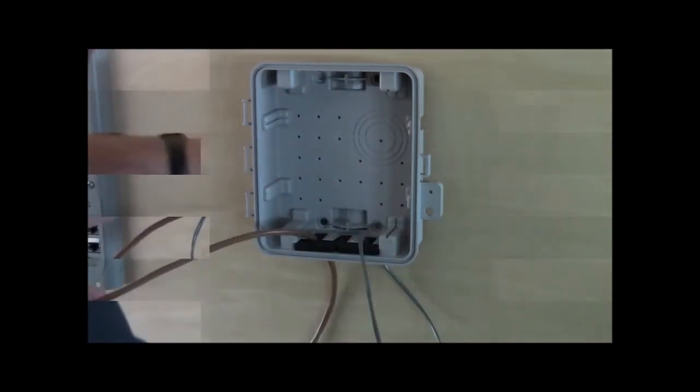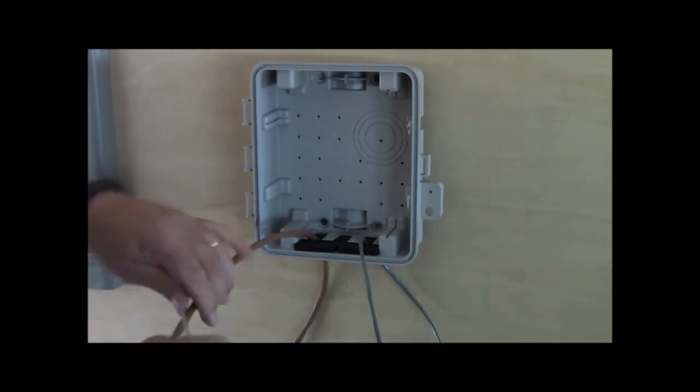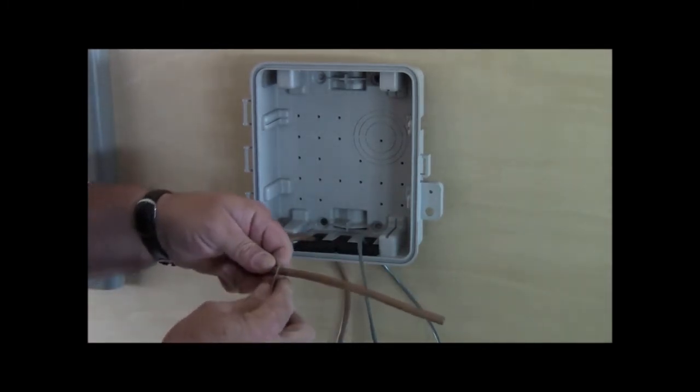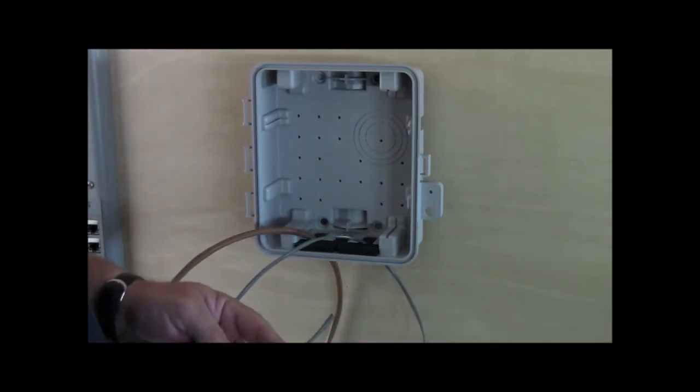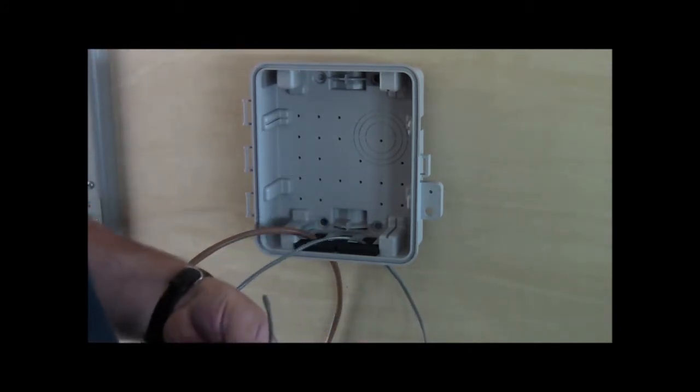Strip the outer insulation on the multi-conductor cable six to eight inches. There is not enough room on the round-jacketed cable between the battery and the enclosure. Strip the conductors in the multi-conductor cable three-eighths inches. Strip the two-conductor three-eighths inches.